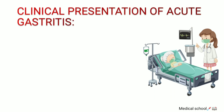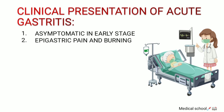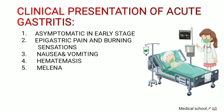The clinical presentation of acute gastritis — remember, this is not a dangerous condition, so it remains asymptomatic in very early stages. But as the condition progresses, the patient may develop epigastric pain and burning sensations. The patient may also feel nausea and vomiting, hematemesis (blood in the vomit), melena, black stools, and blood loss. These three signs are present in very critically ill patients.